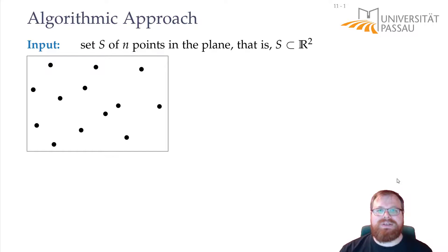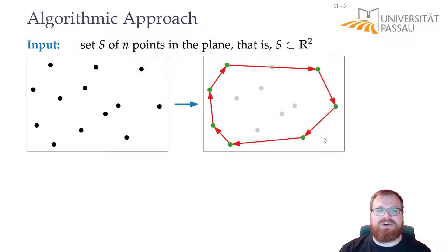For an algorithm we have to know what is our input and what is our output. In this case our input is a set of n points in the plane, so our set S that's a subset of R². And the output we want to have is the convex hull. How do we want to describe the convex hull? We don't want to describe it as a point set because it's not so easy to store a point set.